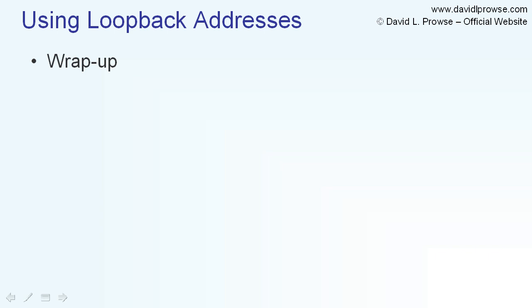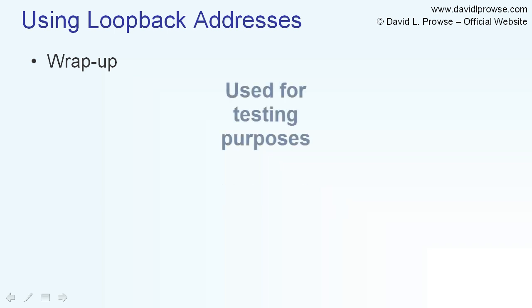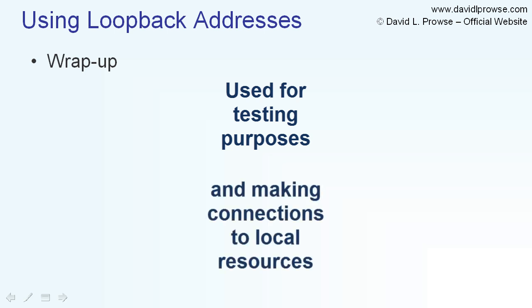So let's wrap it up. In this video, I talked about the loopback address — which for IPv4 is 127.0.0.1 and for IPv6 is ::1. A couple of the purposes for the loopback include usage for testing purposes and to initiate sessions to locally stored resources, thus lessening the load on the network. This is good stuff for A+ and Network+ people to know, and really you should know about the local loopback just for testing purposes if you're doing any type of technical work. Go ahead and try and practice this on your system now.